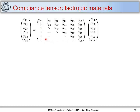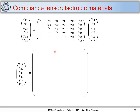Now we'll see how the compliance tensor looks for isotropic materials. We have the strain components, the compliance tensor, and the stress components. We know this compliance tensor will relate normal strains to normal stresses, shear strains to shear stresses, and normal strains to shear stresses — but not shear strains to normal stresses. There will be nine components relating strain to stress.